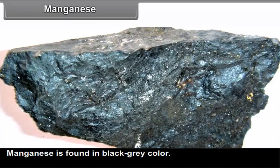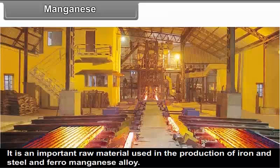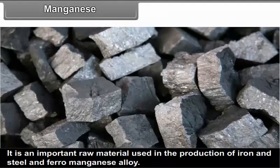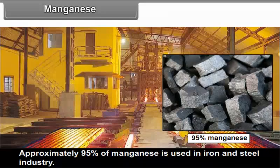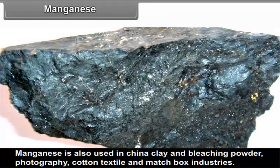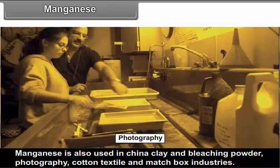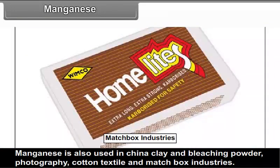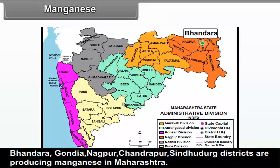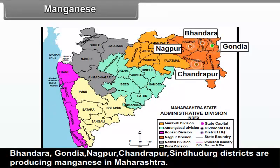Manganese: Manganese is found in black-gray color. It is an important raw material used in the production of iron and steel and ferro-manganese alloy. Approximately 95% of manganese is used in the iron and steel industry, and 10 kg of manganese is used for the production of 1 tonne of steel. Manganese is also used in china clay and bleaching powder, photography, cotton textile and matchbox industries. Maharashtra is a leading producer of manganese in India. Bhandara, Gondia, Nagpur, Chandrapur and Sindhudurg districts produce manganese in Maharashtra.